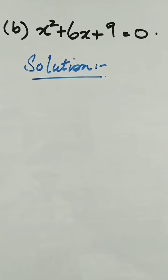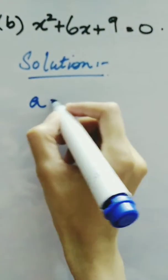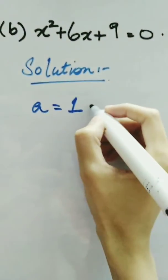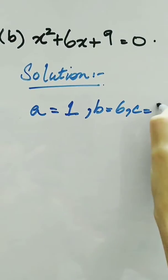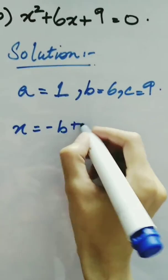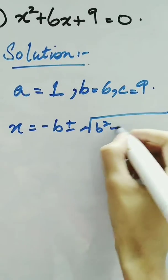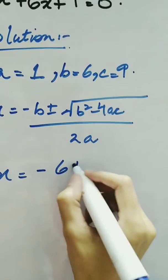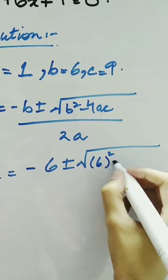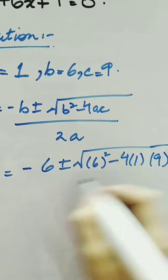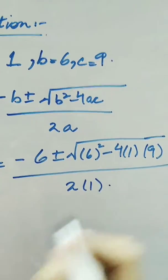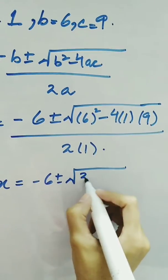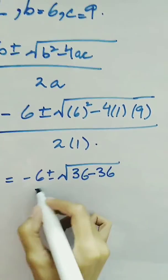Now look at another question which is x squared plus 6x plus 9. Here the value of a is 1, as no other coefficient is written with x squared, so the coefficient is 1. The value of b is 6 and value of c is 9. The formula is minus b plus minus under root b squared minus 4ac over 2a. So we have minus 6 plus minus under root 6 squared minus 4 times 1 times 9, divided by 2a where a is 1.